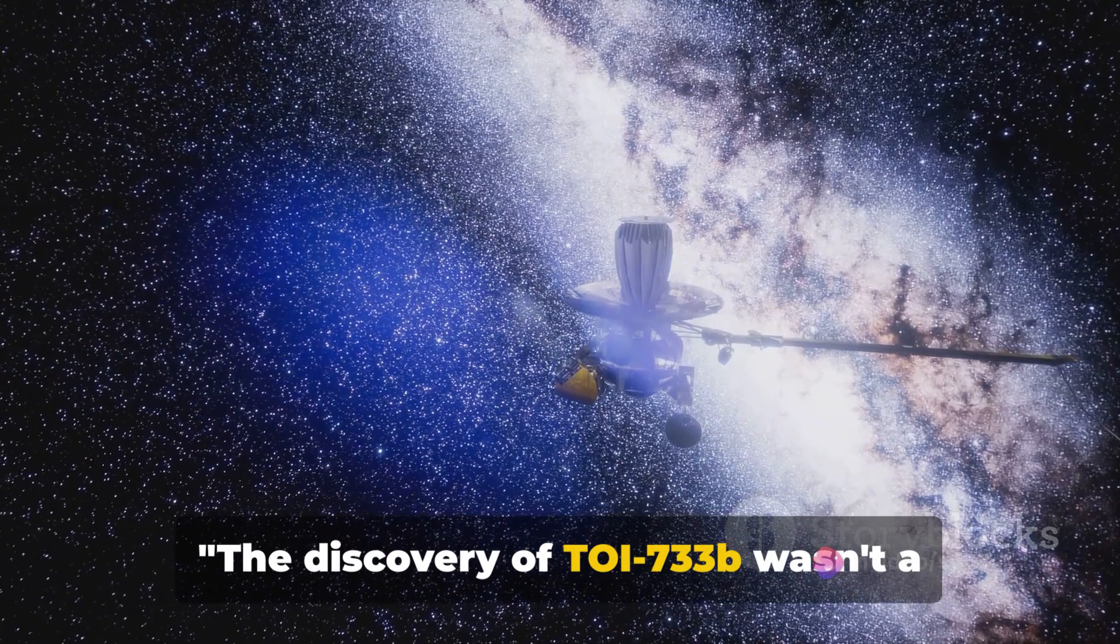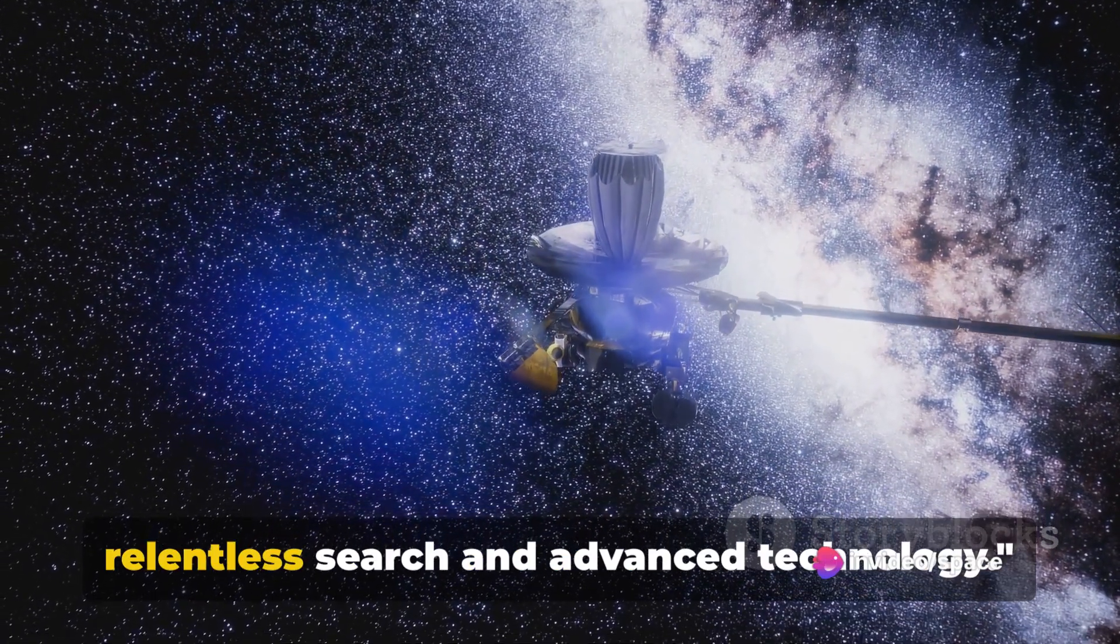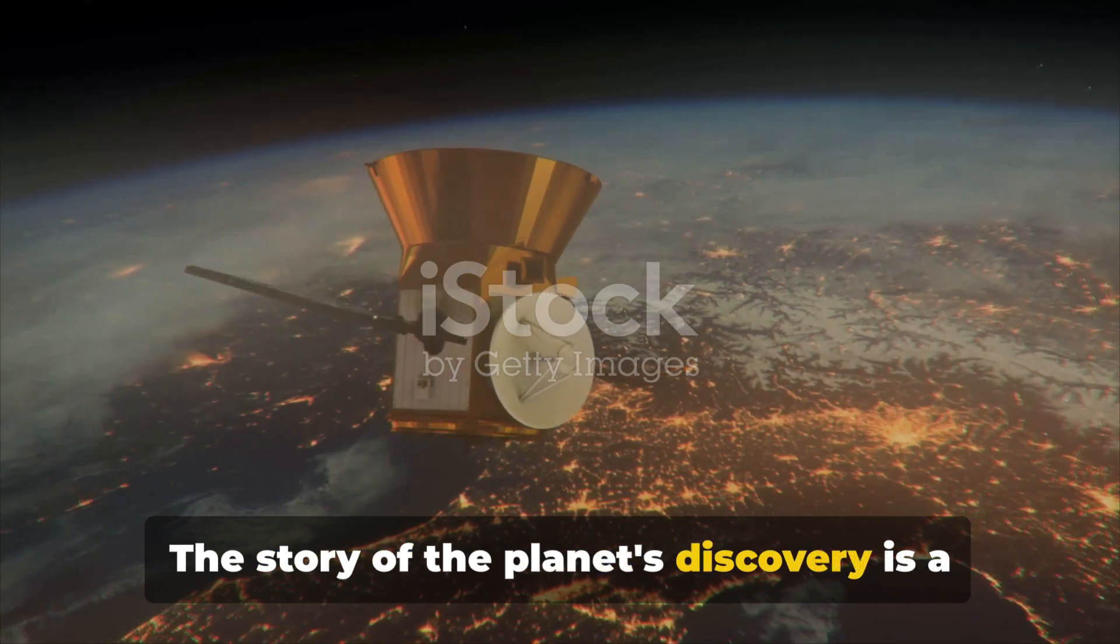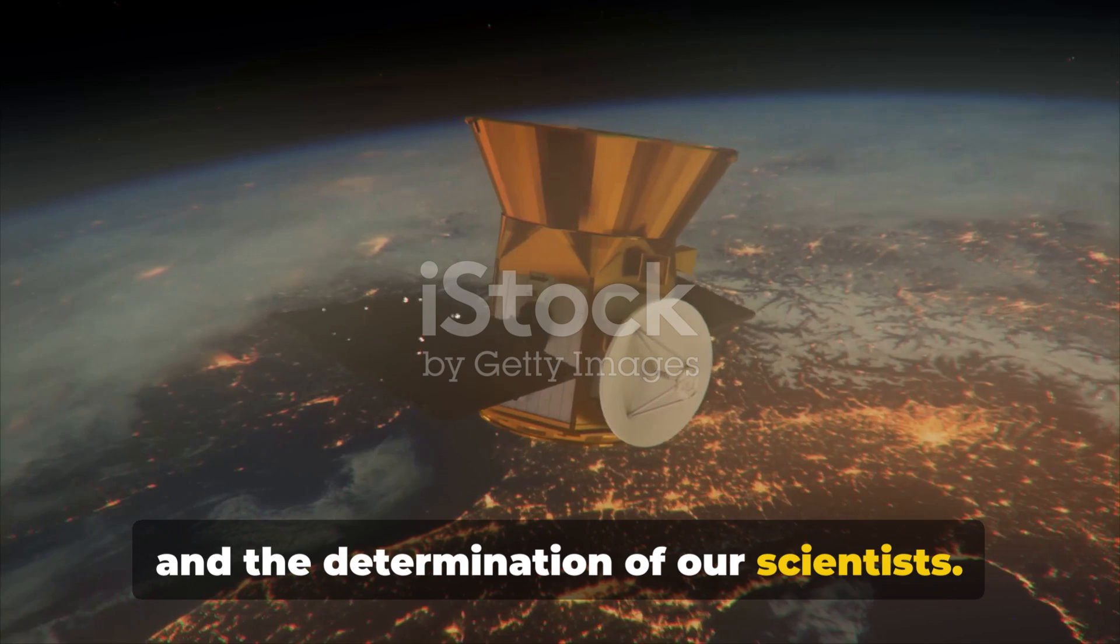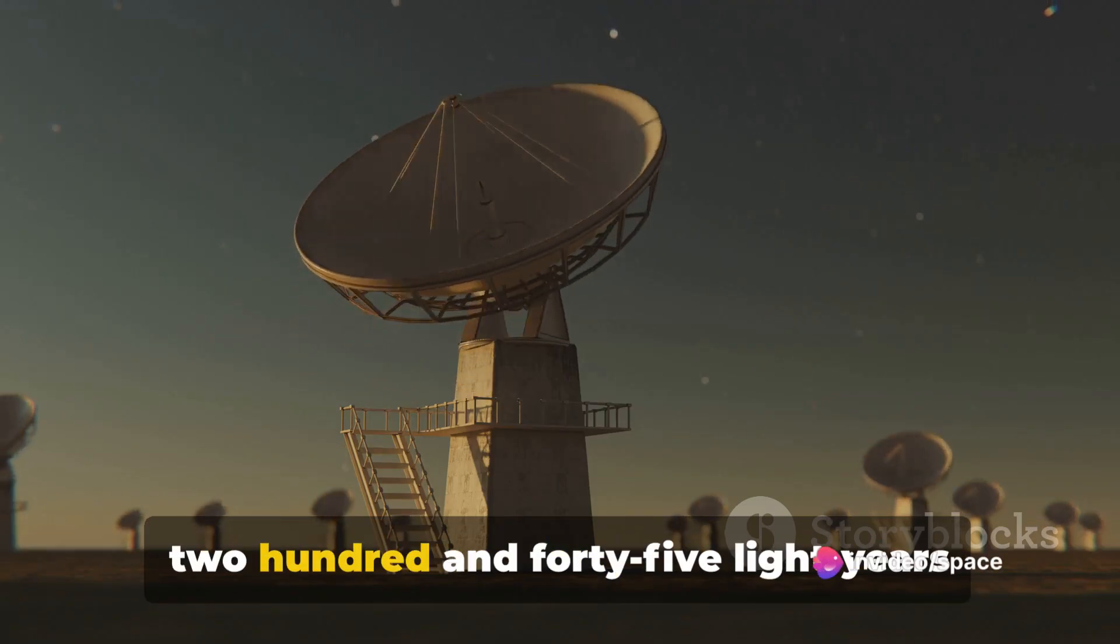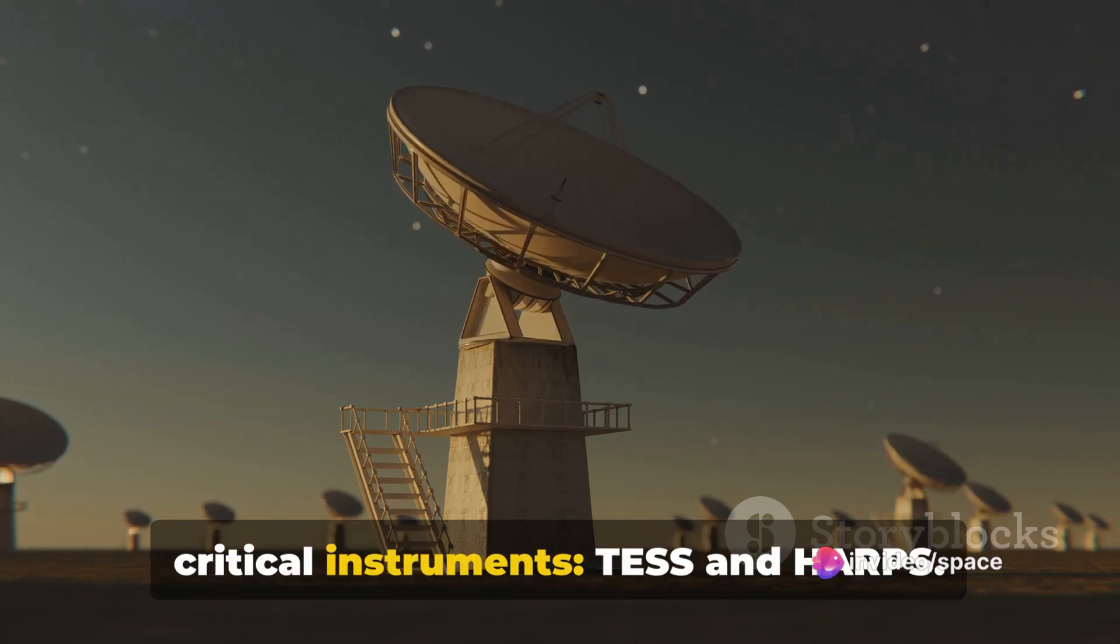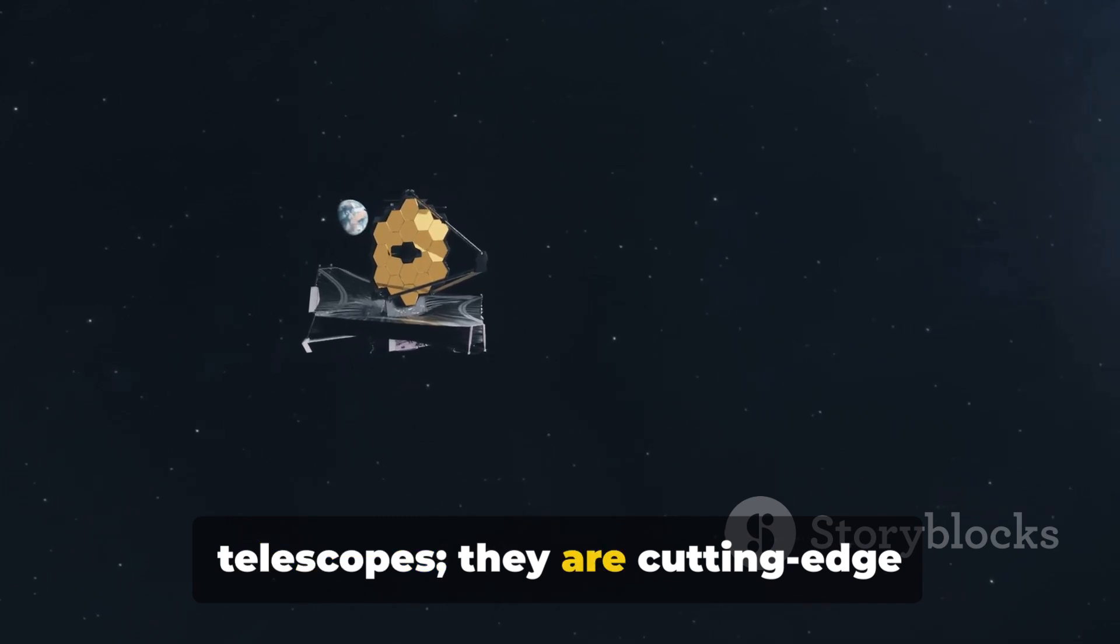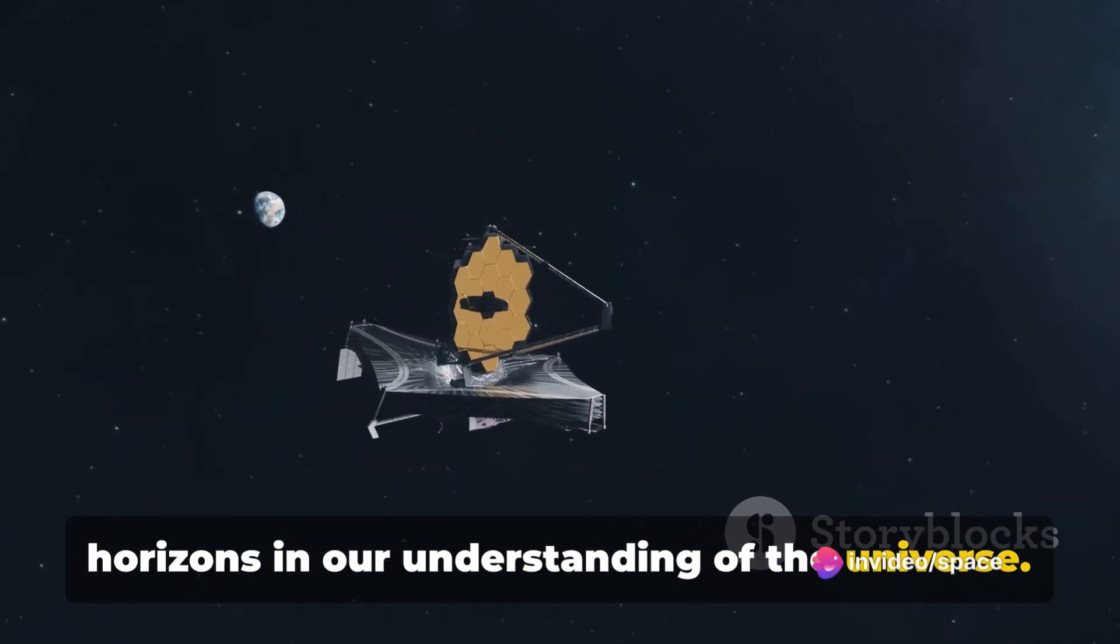The discovery of TOI-733b wasn't a matter of chance, but a result of relentless search and advanced technology. This intriguing exoplanet, located about 245 light-years away, was brought to light using two critical instruments: TESS and HARPS. These tools aren't your average telescopes; they are cutting-edge technologies that have opened up new horizons in our understanding of the universe.